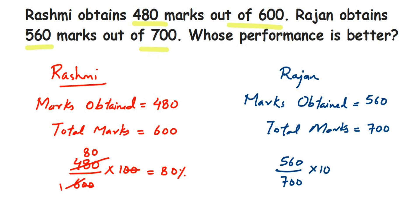Cancel the zeros — 7 goes into 560: 7 eights are 56, and then a 0 is left. So this is equal to 80%. Both of them got 80 percent — they performed equally, which means we cannot differentiate their percentage here.